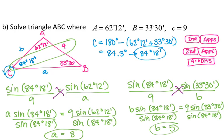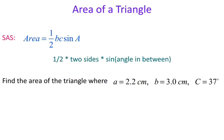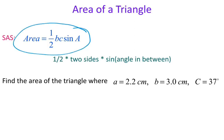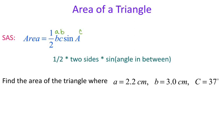Now we have solved our triangle — mission accomplished. The last thing we'll look at in this lesson is finding the area of a triangle. This applies to side-angle-side triangles, when you know two sides and the angle in between. The formula is: Area = (1/2) times the product of your two sides times the sine of the included angle. The sides and angle are interchangeable — you can use sides b and c with angle A, sides a and b with angle C, or sides a and c with angle B.